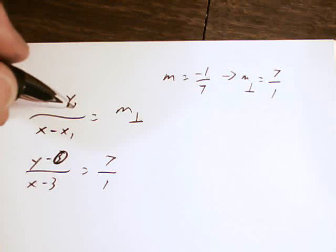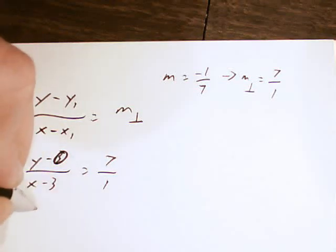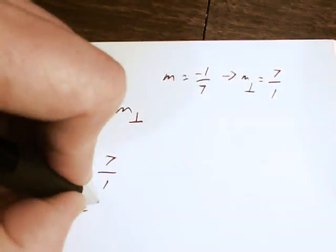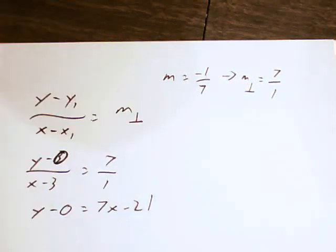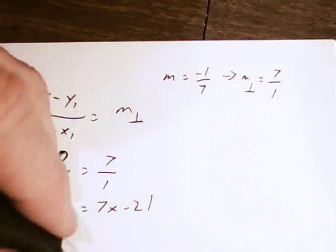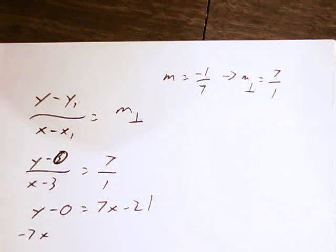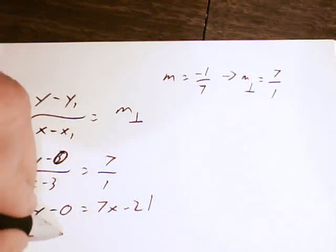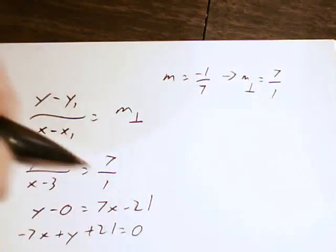I'll now just cross multiply and I get y minus 0 equals 7x minus 21. I'll move everything over to the left-hand side. Negative 7x plus y plus 21 equals 0.